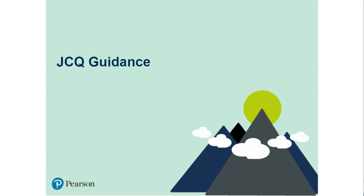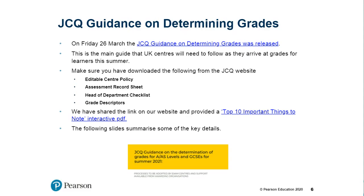Let's have a look at what's come out of JCQ, because all awarding bodies are effectively deferring to JCQ — the umbrella organisation that represents us all. They have collated and put together the guidance, and particularly the grade descriptors have all come through from JCQ so that all awarding bodies are following the same policies. When you get the recording, the links are all live. If you want to look at anything now, there is a list of links on the left-hand side of your screen in the resource list.